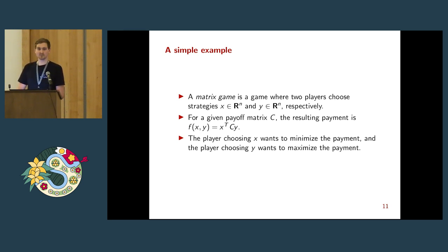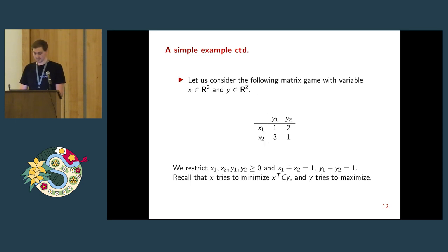It's basically a zero-sum game because if x improves, then y deteriorates in outcome. Let's look at a simple example here. We have a payoff matrix C: one, two, three, one. We have player x here who basically chooses the rows, and we have player y who chooses the columns. Let's think about how we could solve that problem. Maybe just x starts and says, well, I'm just picking the row first. Here's a one and a two, here's a three and a one. I want to minimize, so I'll just pick the first row.